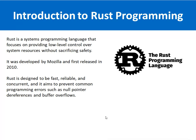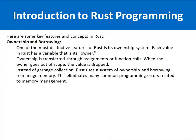Rust is basically a programming language used for low-level programming, or you can say system-level programming, so that we can have control over system resources without any compromise on safety concerns. It was developed by Mozilla and first released in 2010. Rust is very fast, reliable, and concurrent — concurrency means multi-threading — and it aims to prevent common programming errors such as null pointer references and buffer overflows.